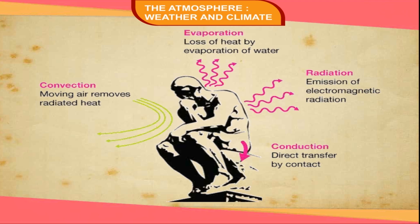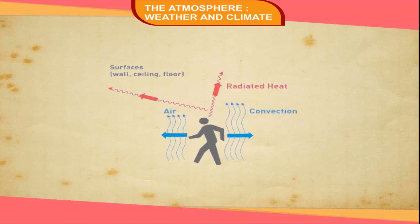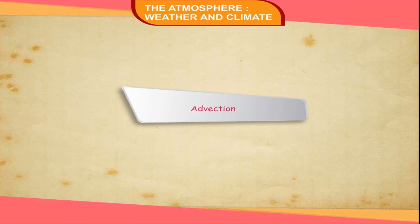Conduction is the transfer of heat through contact. A cooler body comes in contact with a warmer body and gets heated. When the lower layer of the atmosphere, which is in touch with the ground, comes in contact with the upper layer, the heat particles move from the lower to the upper layer; thus, the atmosphere is heated gradually upwards. Convection: when the air gets heated and becomes lighter, it starts to rise. This process of transfer of heat is called convection. The rising air currents are called convection currents, and as they rise, they keep transferring heat from the lower layers of air to the higher layers.